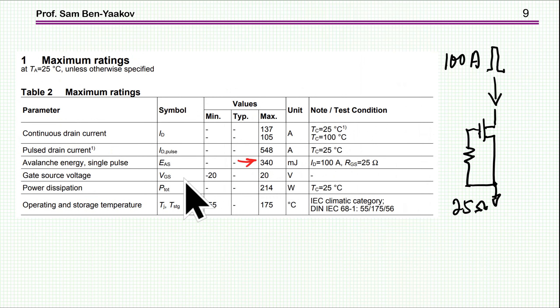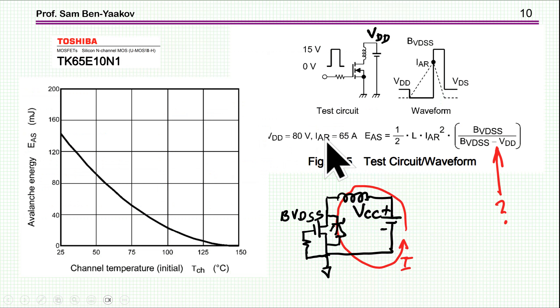An interesting parameter is avalanche energy single pulse. What it is, is the ability of the transistor to absorb energy while it is breaking down. If you are trying to exceed the voltage by injecting a current, the transistor can absorb the energy while in breakdown mode. This transistor is 100 volt, so it will be like a Zener of 100 volt capable of absorbing 340 millijoules.